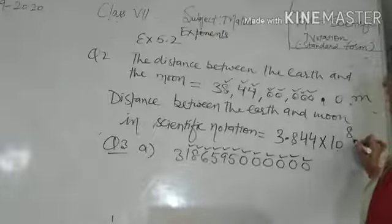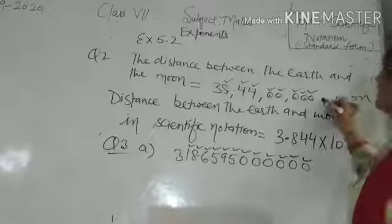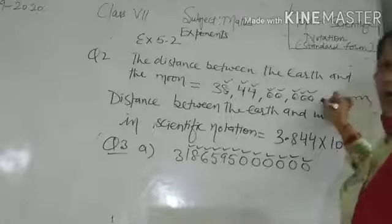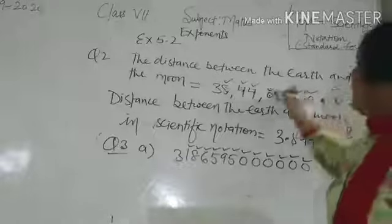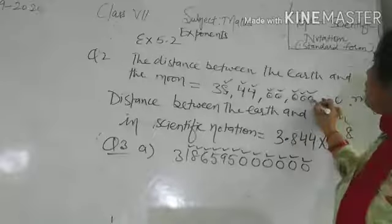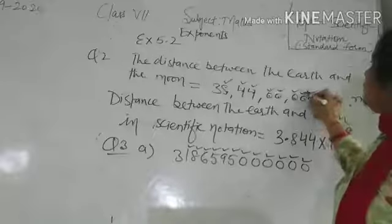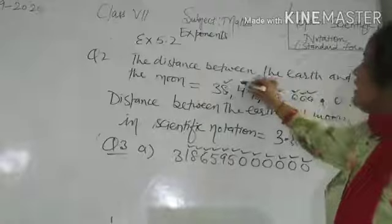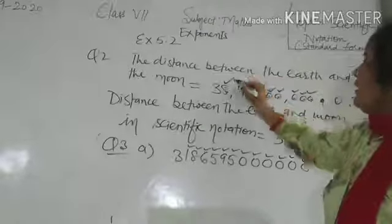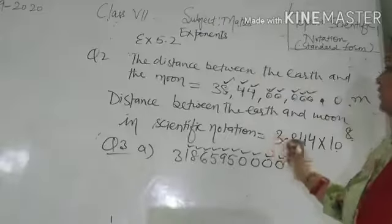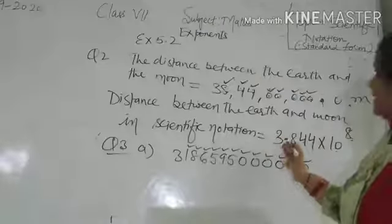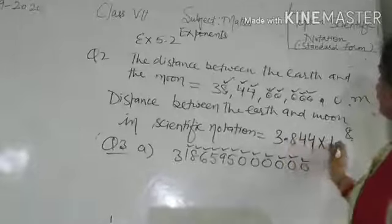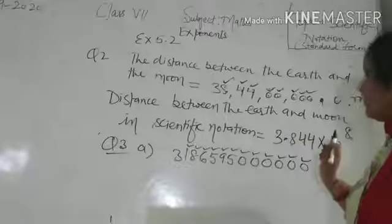The distance between the earth and the moon in scientific notation is 3.844 into 10 raised to power 8, because the decimal was moved 8 places to the left.